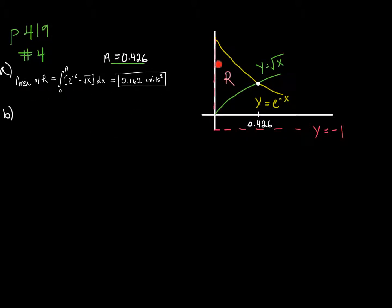In part B, I'm going to revolve region R about the line y equals negative 1, forming a three-dimensional solid, and I want to find the volume. I want to visualize this — I can see the gap between the region and my line of revolution, which will cause a hollow on the inside of my solid. That means each slice or cross-section is going to have a circular part cut out from the center — it's going to be washer-shaped. I'll draw one cross-section and pull it out to visualize it flat.